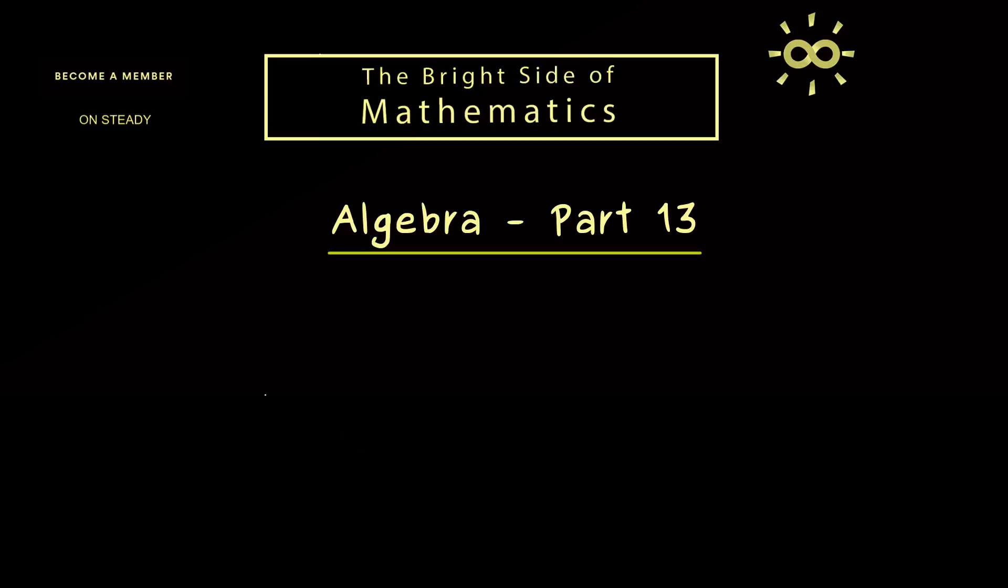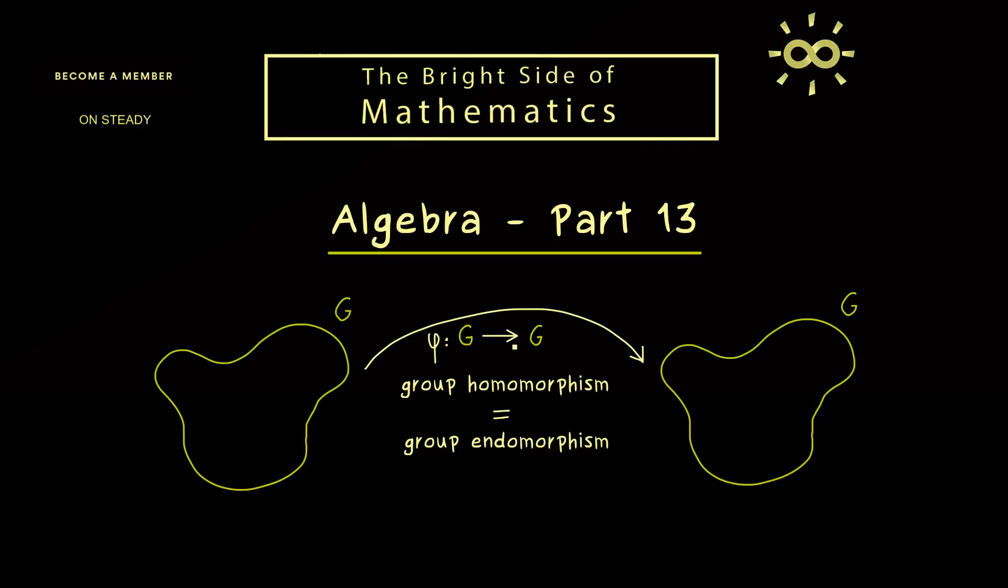Ok then let's immediately start with the general picture, which explains that a group homomorphism transports subgroups. In fact we have already discussed that in general with the last video and now we can apply it to some special group homomorphisms. Namely we consider a group homomorphism φ, which sends the group G to G again. Now such a homomorphism which just considers one group is usually called an endomorphism. Indeed you can remember that in general, if we have the transformation from the object into itself, it's called an endomorphism.